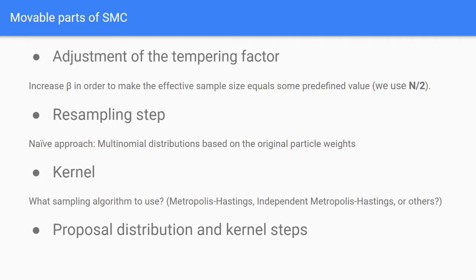Another critical component of SMC is the sampling algorithm used to produce the random perturbations after the resampling step. This is called the kernel. Some of the algorithms that can be used here are Metropolis-Hastings, independent Metropolis-Hastings that has been recently implemented into PyMC3, or gradient-based methods such as Hamiltonian Monte Carlo.